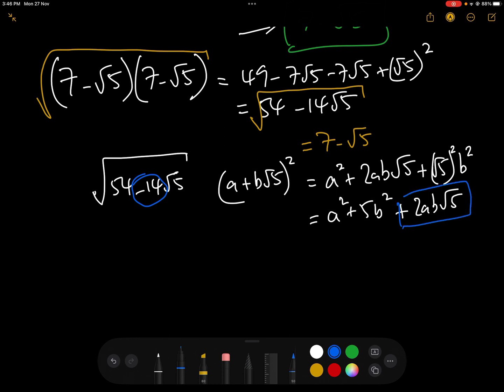So all we need to check with the factor pairs is this number here, that it equals this number here, which is what we did. So we had to just check that a squared add 5b squared equaled 54. And then once we had found that factor pair, we simply plunked that in as the answer.